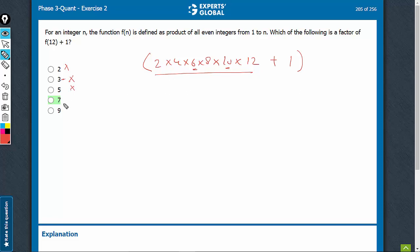7, there's no 7 here. So 7 is a contender. 9, we know that 3 is not a factor. So how can 9 be a factor?